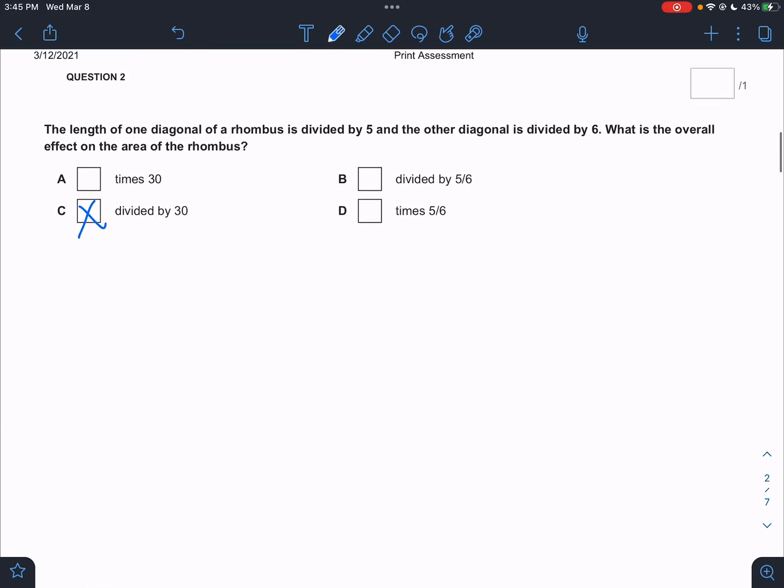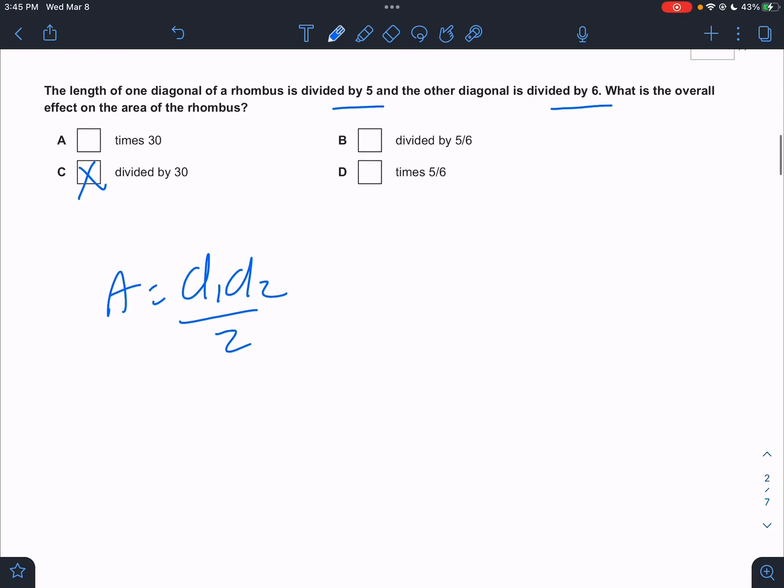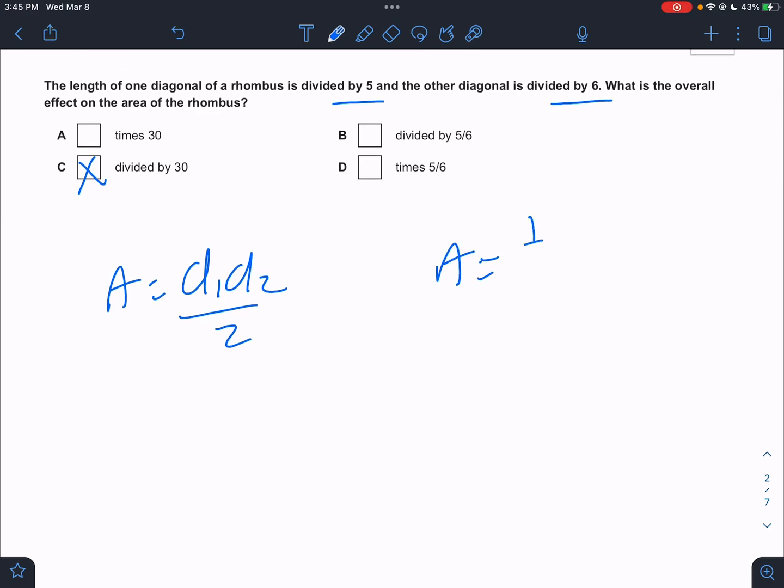The length of one diagonal of a rhombus. So the area of a diagonal is D1, D2 divided by 2. One diagonal is divided by 5. The other one is divided by 6. So the new situation is one fifth D1, one sixth D2 divided by 2. Well, if I multiply those out, don't I have one fifth times one sixth? That would be one over 30 times the original numbers.